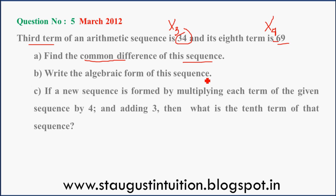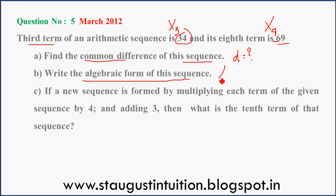This sequence's common difference — you have to find D. What is D? Also, write the algebraic form of this sequence, that is Xn.